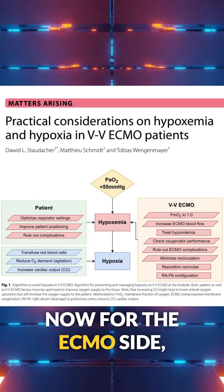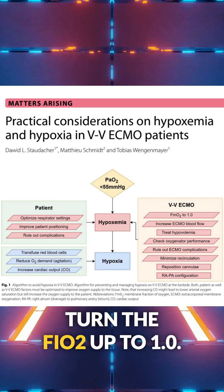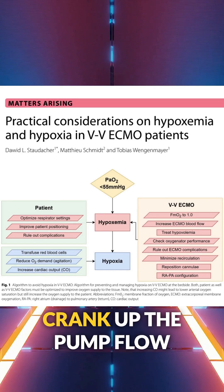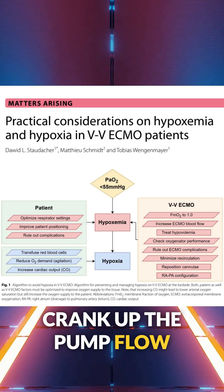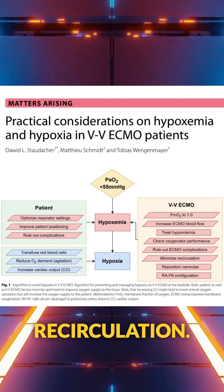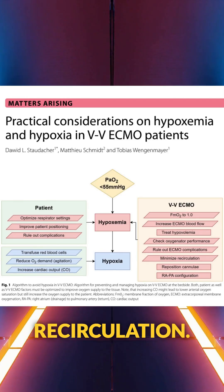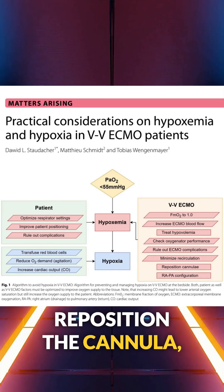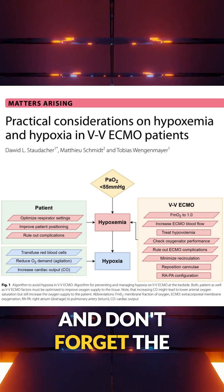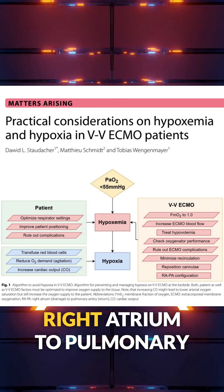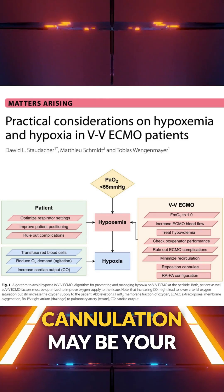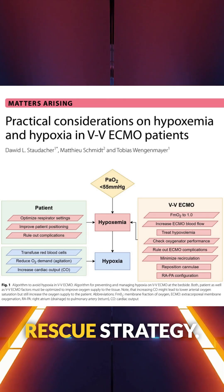Now for the ECMO side. Turn the FiO2 up to 1.0, crank up the pump flow, and check for oxygenator failure or circuit recirculation. Reposition the cannula, rule out clots or kinks, and don't forget — right atrium to pulmonary artery cannulation may be your rescue strategy.